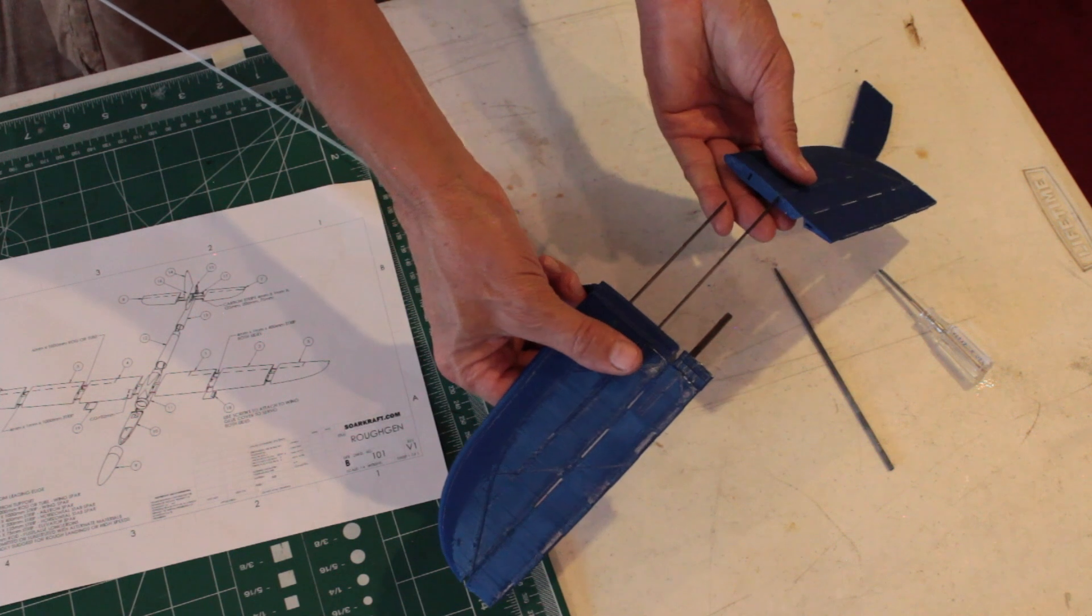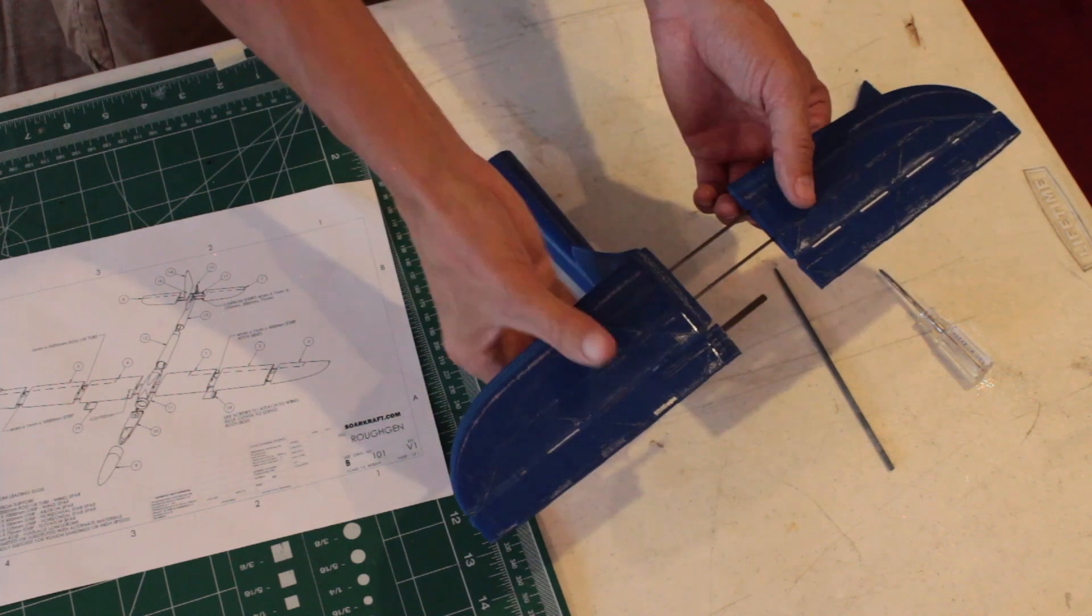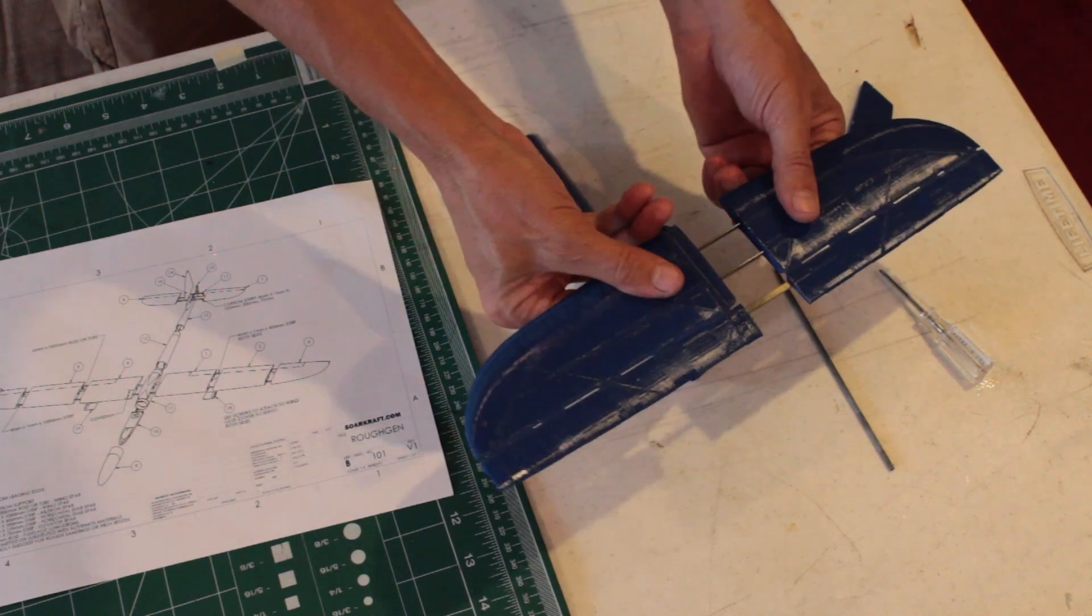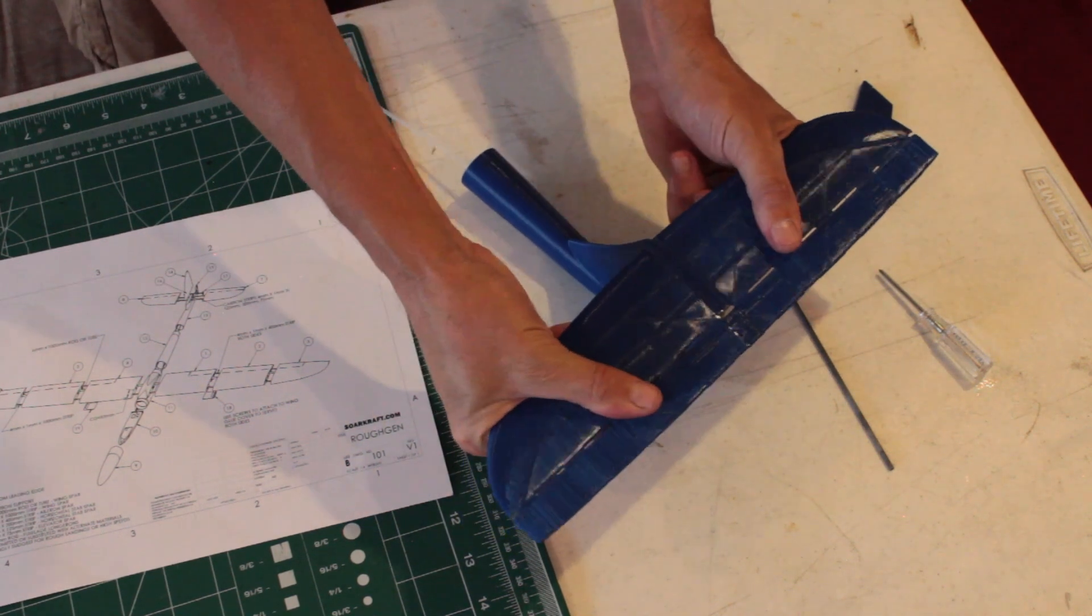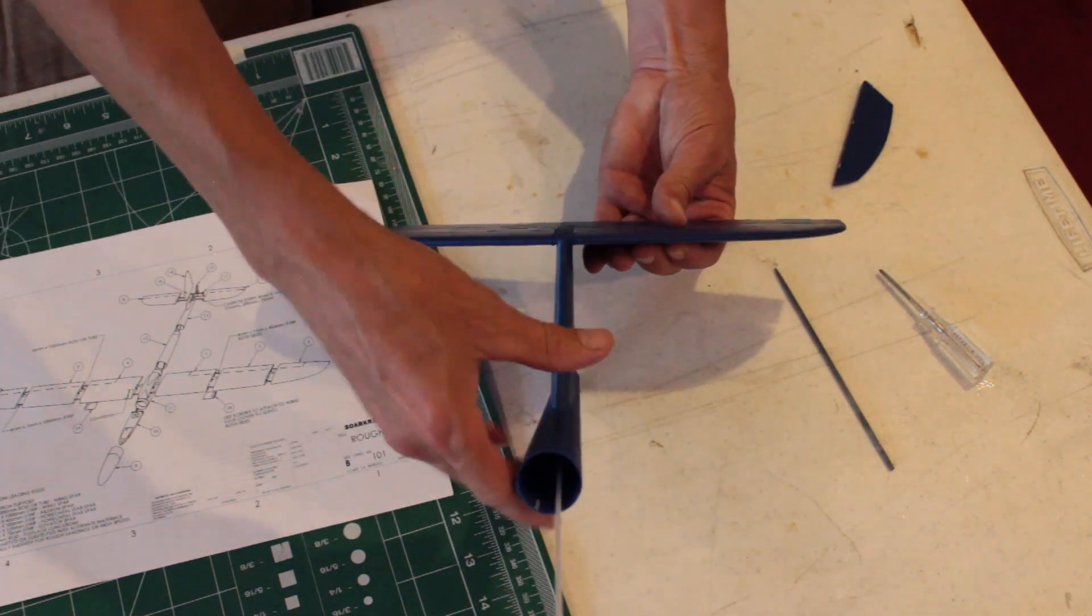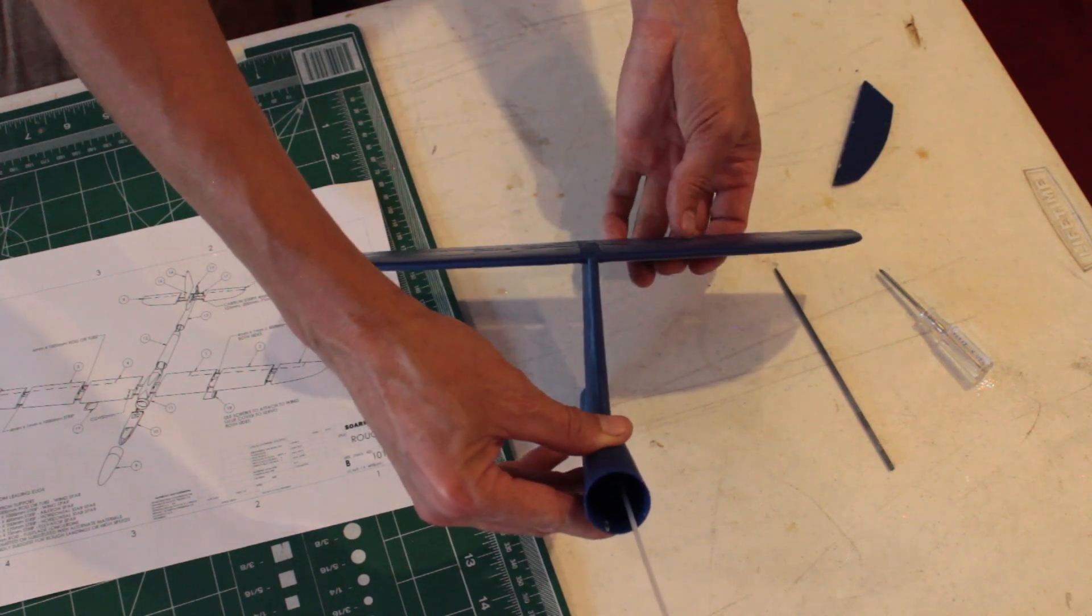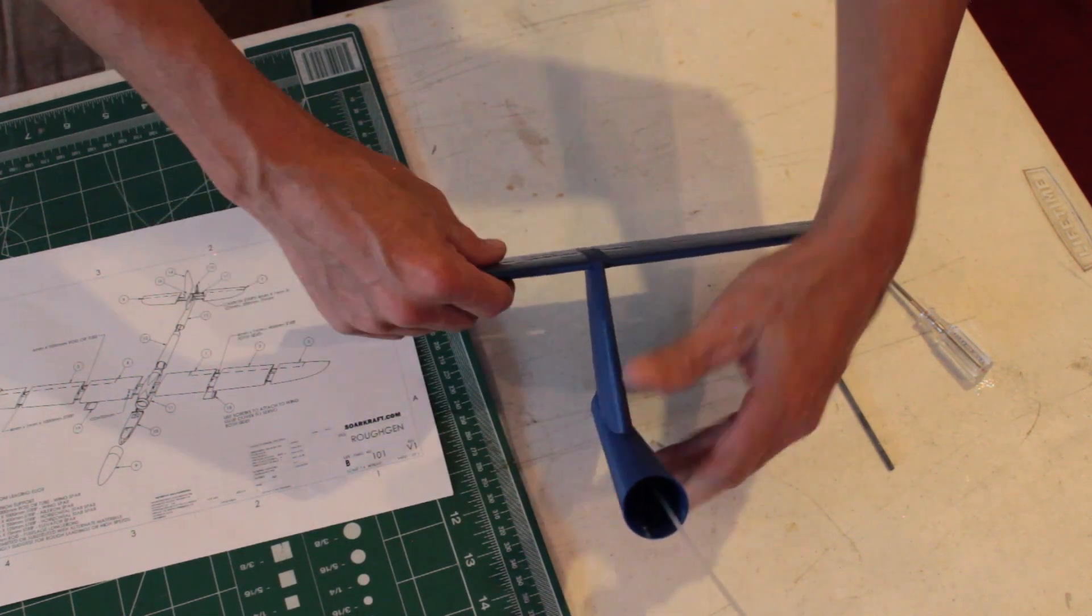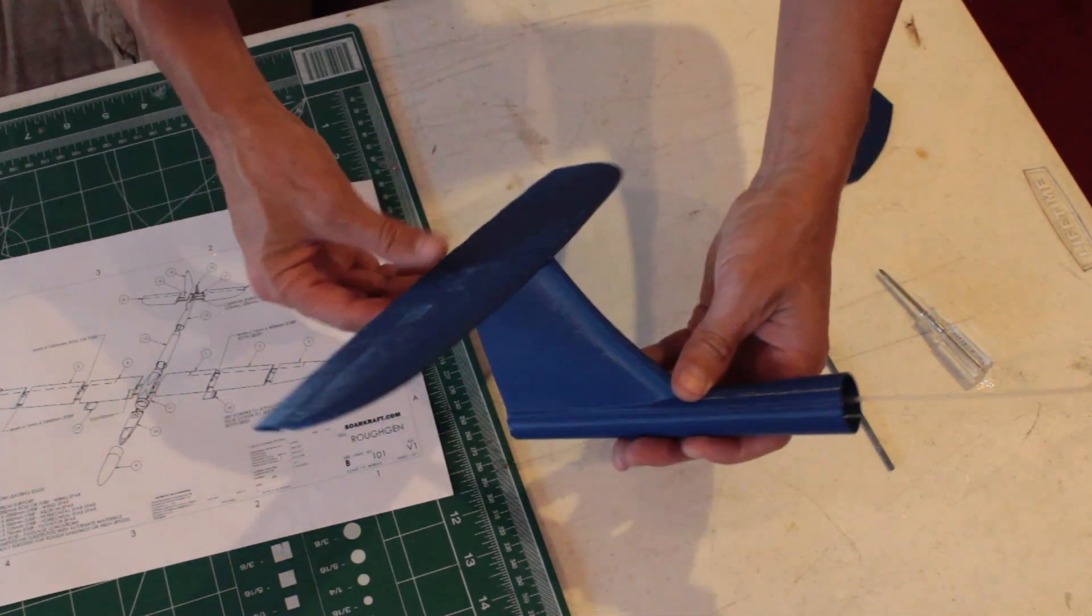You assemble, then you glue everything together with CA, but you want to make sure that this is nice and square with the tail. This one is relatively tight so it doesn't move too much. Then once you get the carbon supports glued in place, it's a breeze.